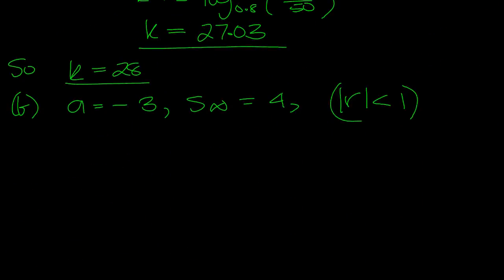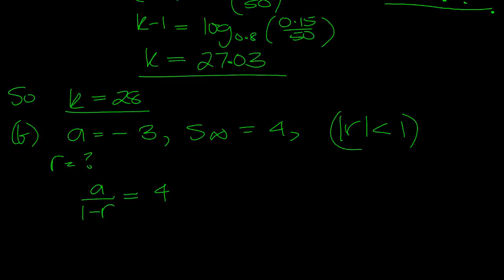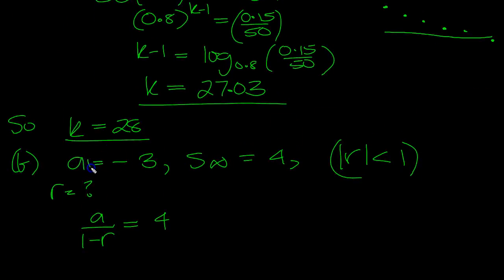Well, S infinity is a over (1 minus r) equals 4. Let me look at that question again. a2 is minus 3, so ar equals minus 3. If I multiply by r top and bottom, then I can put in minus 3.